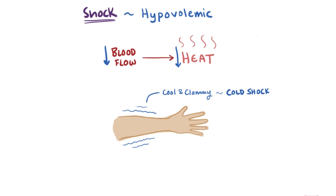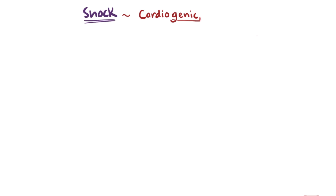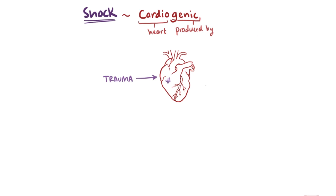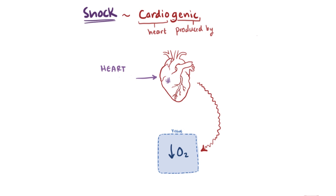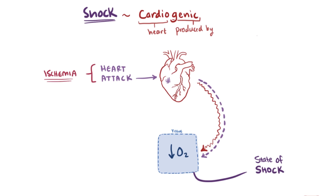The second main category is cardiogenic shock, meaning shock produced by the heart — when something happens to the heart such that it can't pump enough blood to the body's tissues. The most common cause is acute myocardial infarction, or heart attack. While the heart attack itself reflects localized ischemia, the effects of the initial cardiac damage eventually lead to a state of shock.